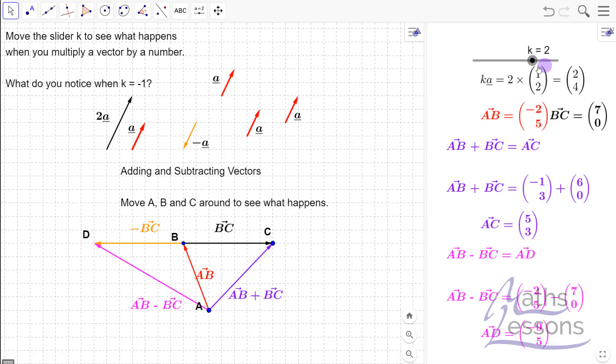And it doesn't have to be a positive multiple, it could be a negative multiple. So if we make k, say, minus 1, we notice it's just going to be in the opposite direction, exactly same as minus A.